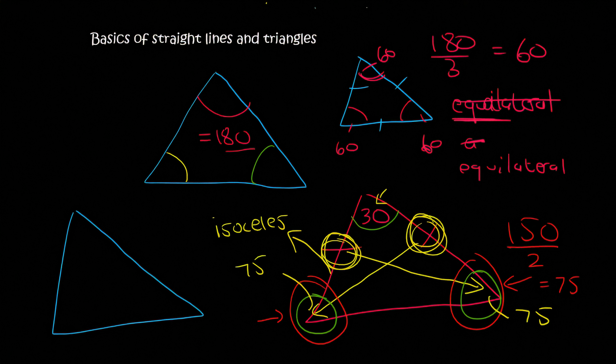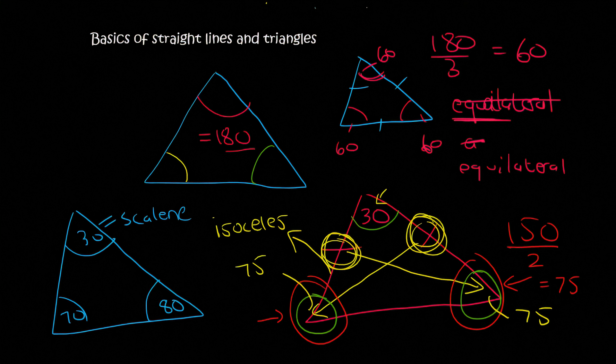And then lastly, you get triangles where none of the sides are the same. We call that a scalene triangle. For example, this would be 30, this would be 70. We know that all angles of a triangle add up to 180, and so 70 plus 30 is already 100, which means this would have to be 80. Notice none of the angles are the same, because none of the sides are the same.